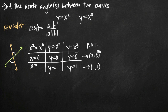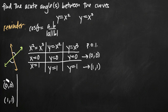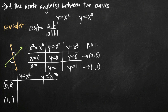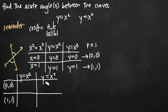Now we need to find tangent line equations for both of these curves at both of these coordinate points. I like to make another chart with the points of intersection — (0, 0) and (1, 1) — on the left-hand side, and my two equations — y equals x squared and y equals x cubed — across the top. I have four boxes in this chart that I need to fill in, each with an equation for a tangent line.